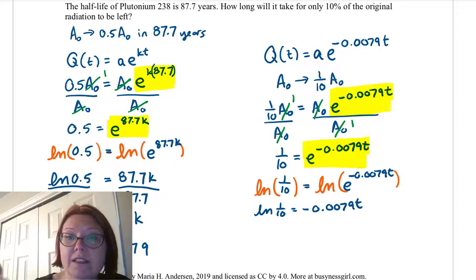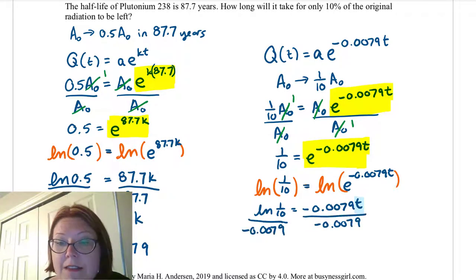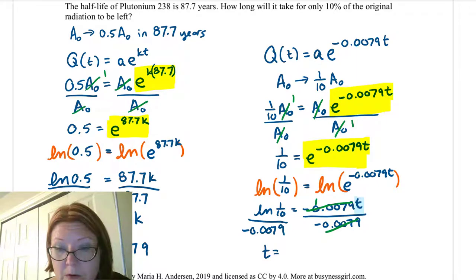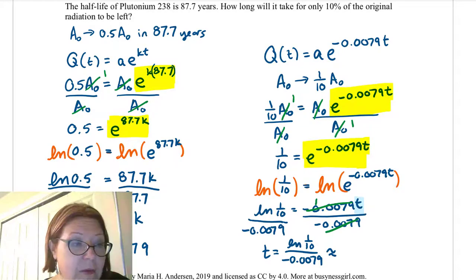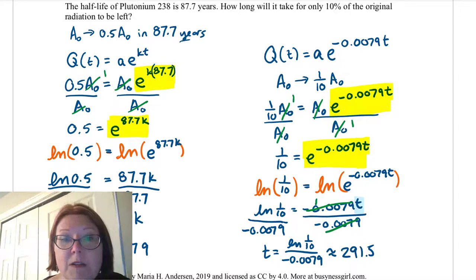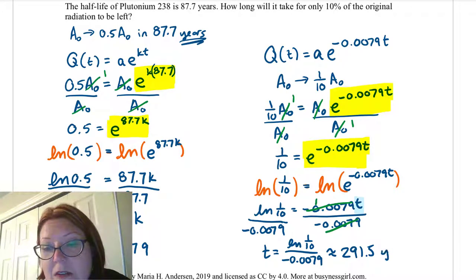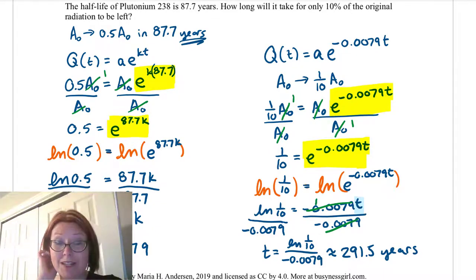Finally, I want to isolate t, so I'll divide both sides by negative 0.0079. The negative 0.0079 reduces on the right-hand side to 1, leaving t equals natural log of one-tenth divided by negative 0.0079. Evaluating that gives 291.5 — and this is all in years, because the original half-life was in years. So it takes 291.5 years for only 10% of the original radiation to be left, which is a really long time.